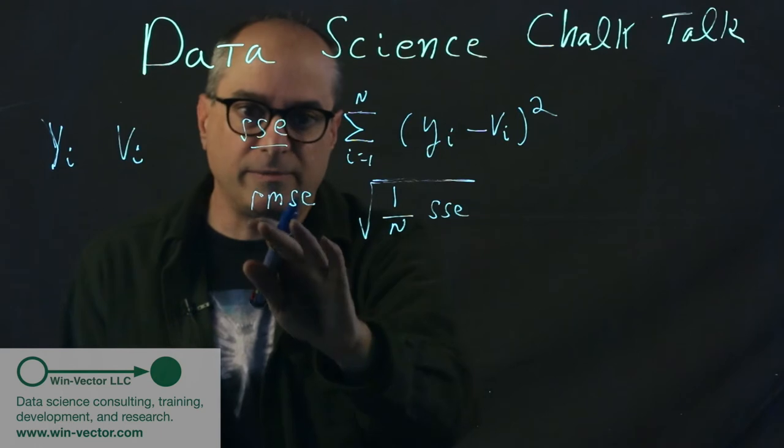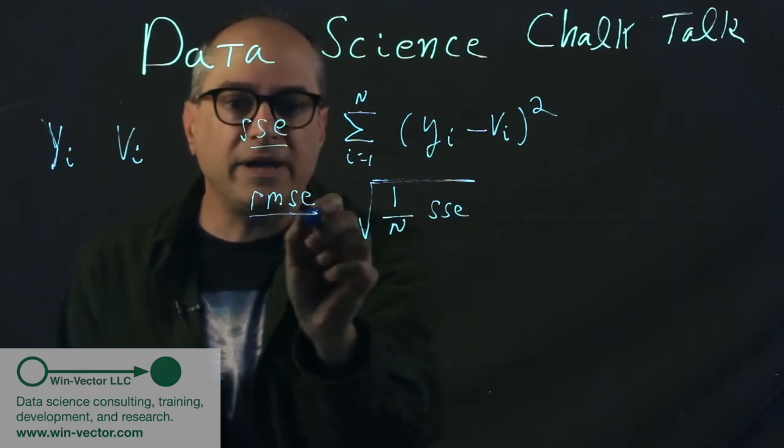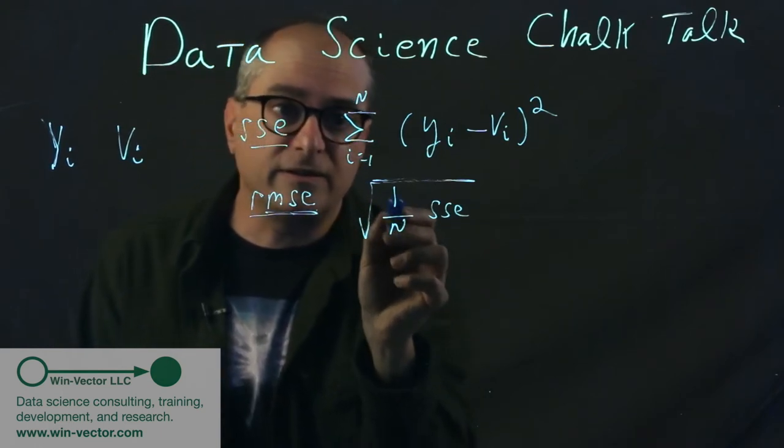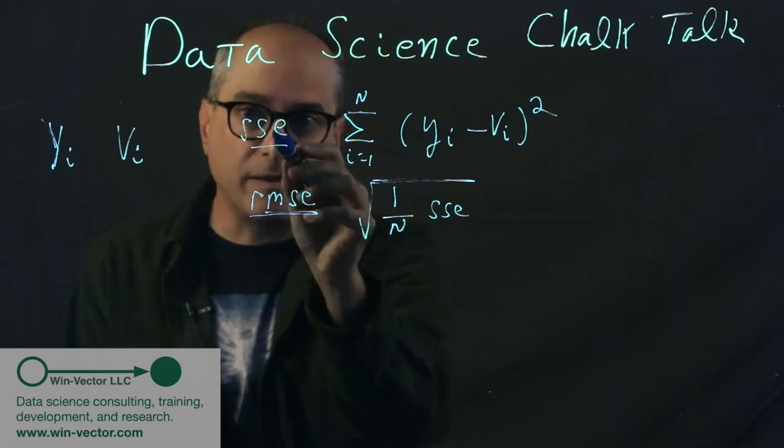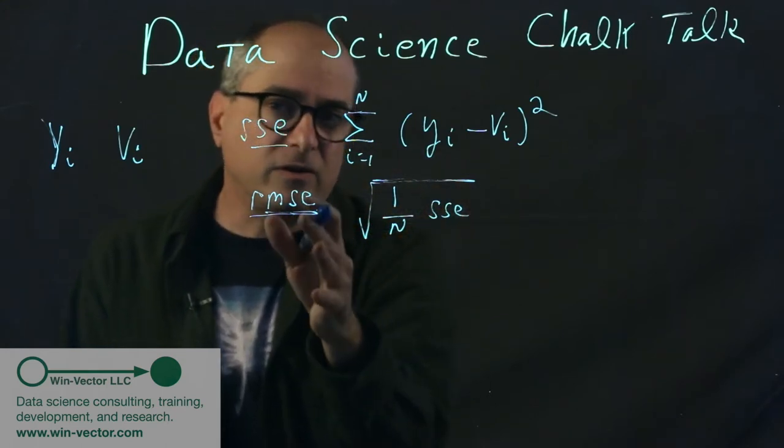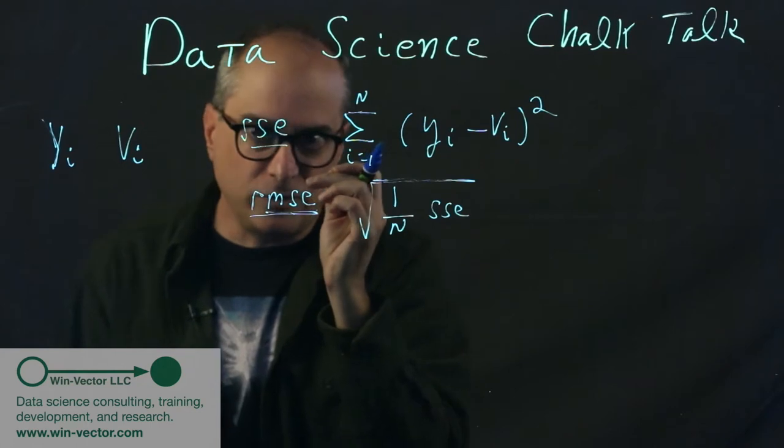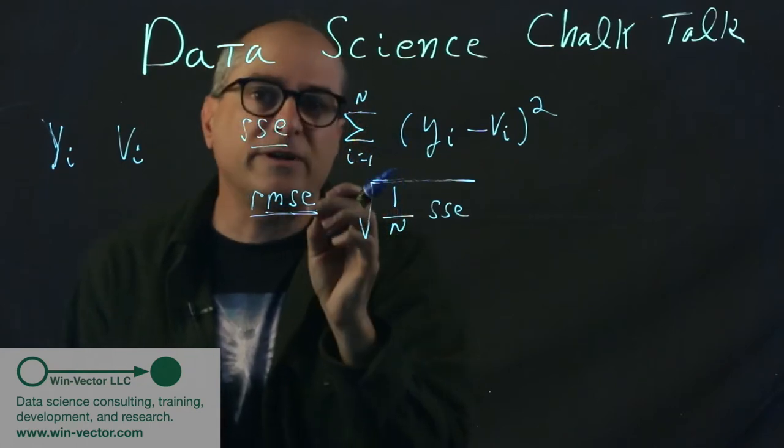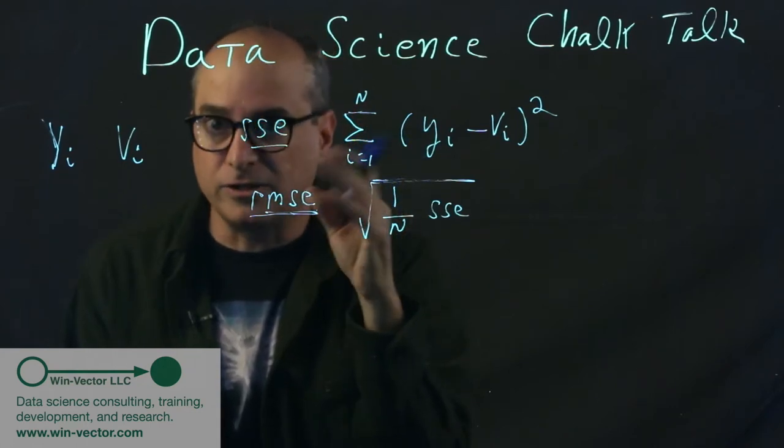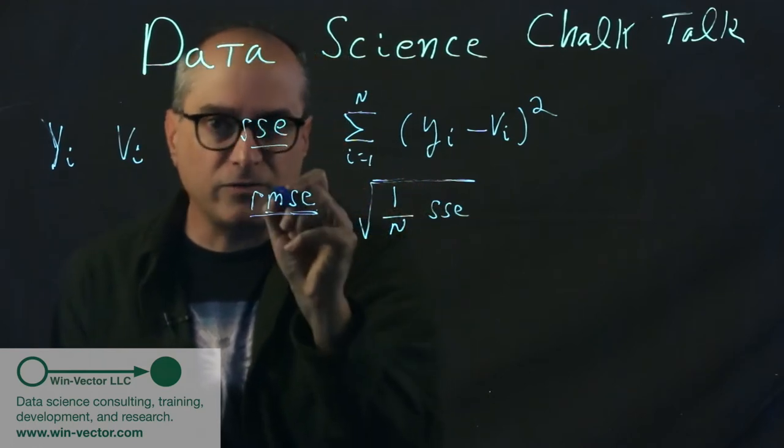It's back into your original units. If YI and VI are in dollars, RMSE is in dollars. And it's independent of data set size because it divided by the number of rows converting the sum to a mean. So this is a great metric. And it's in your domain units. So if you're a real estate agent, you know whether RMSE of $10,000 is large or small. So this solves a lot of problems.